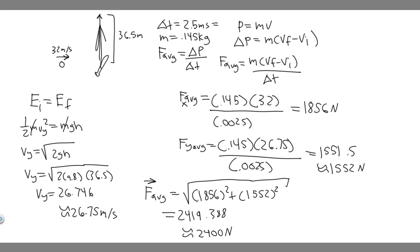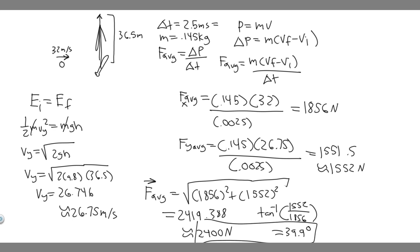We also want to find the direction. To find the angle, take the arc tangent of y over x: arctan(1,552 over 1,856), which gives 39.9 degrees. So the final answers are 2,400 newtons for the magnitude and 39.9 degrees for the direction.